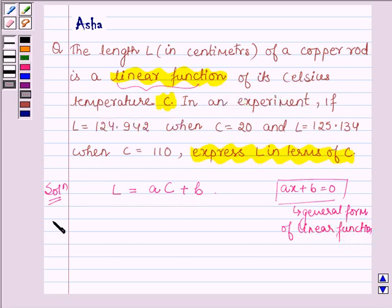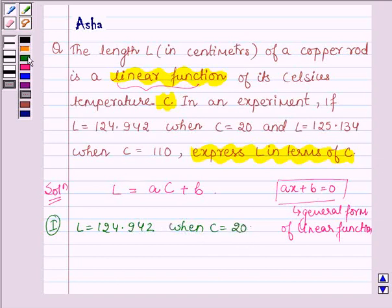Now, the first case is L equals 124.942 when C equals 20. So this equation can be written as 124.942 equals A times 20 plus B. This is equation number 1.